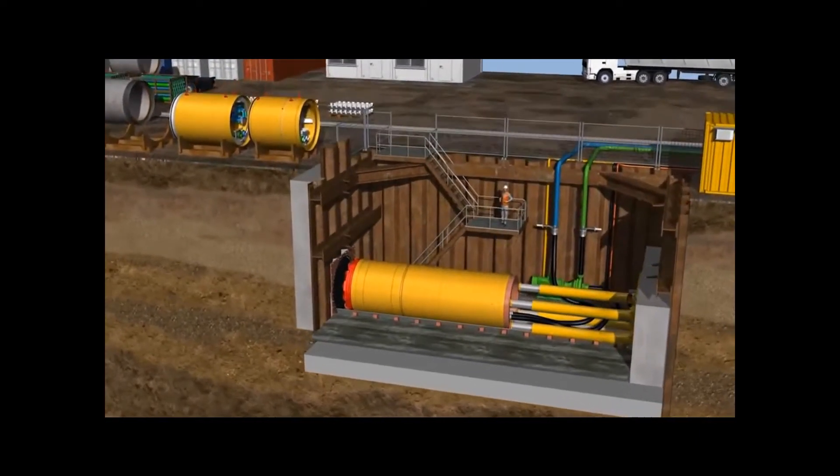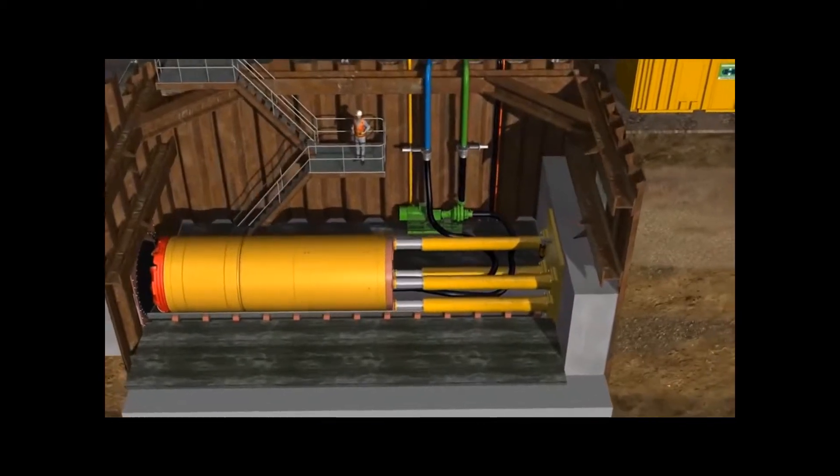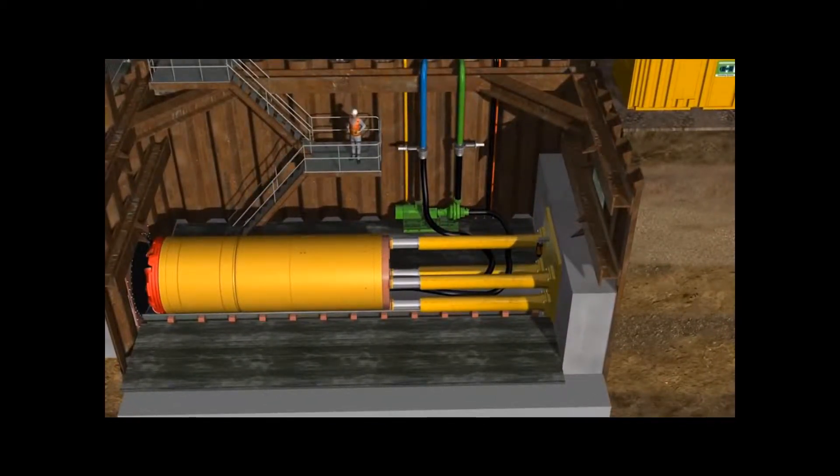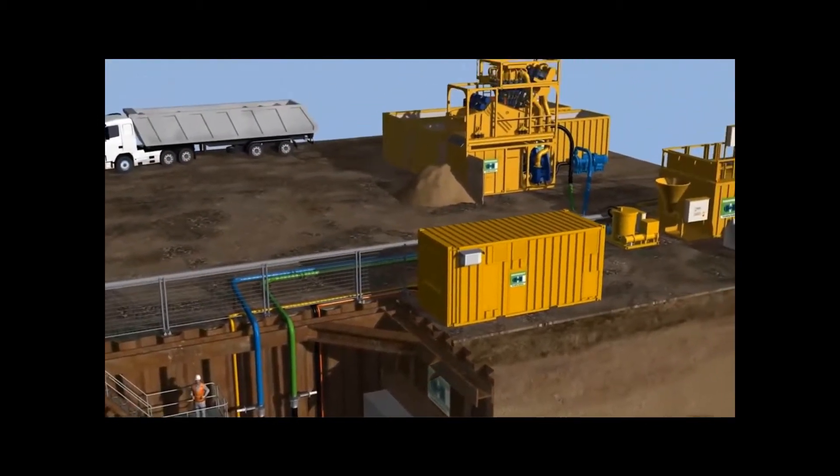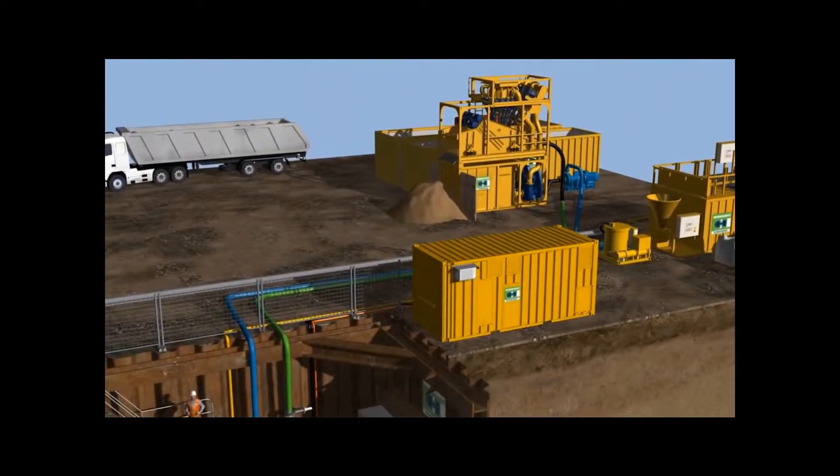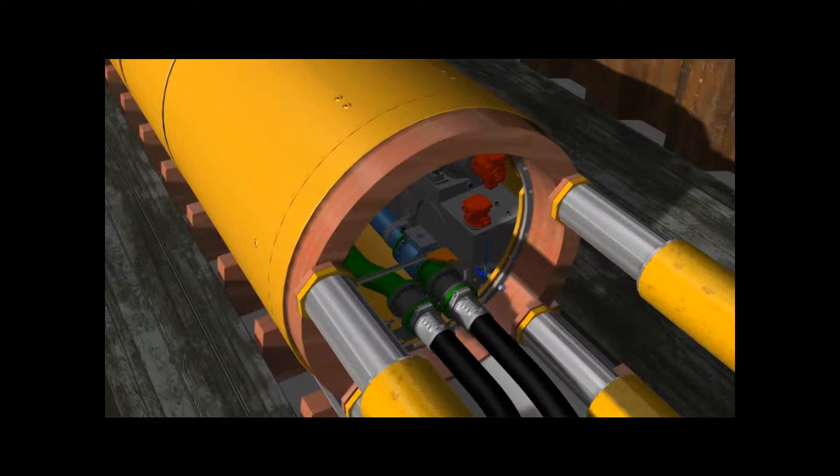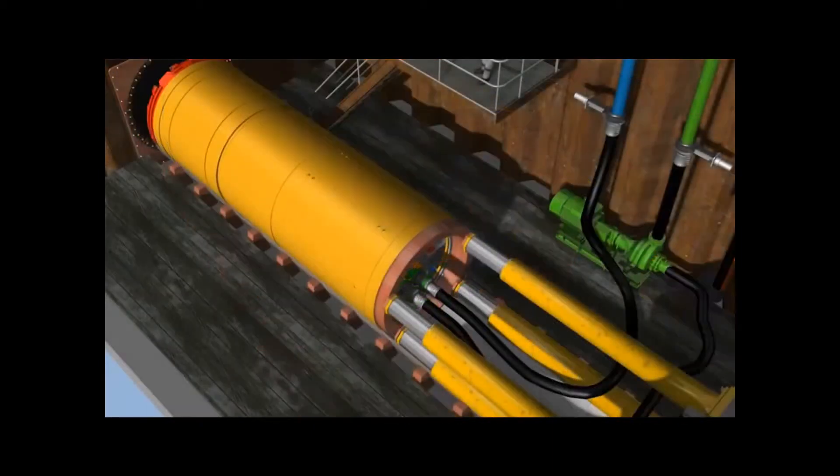To operate the AVN, a closed slurry circuit is necessary. A slurry pump is installed in the launch shaft and the feed pump is installed at the separation plant. The system is connected to the tunnel boring machine with slurry lines and hoses. The system is filled with water or bentonite, a mixture of water and clay powder.